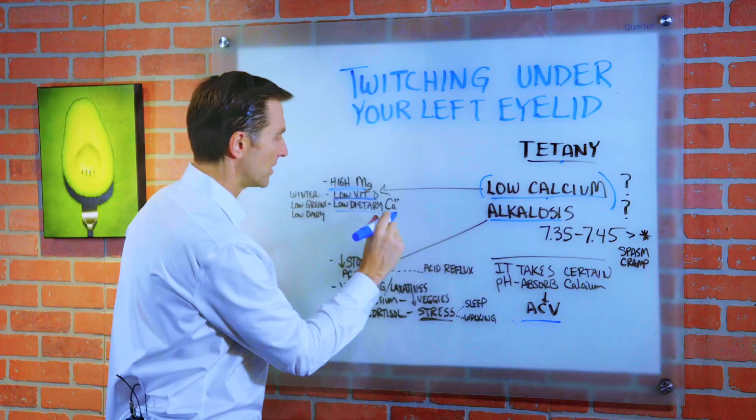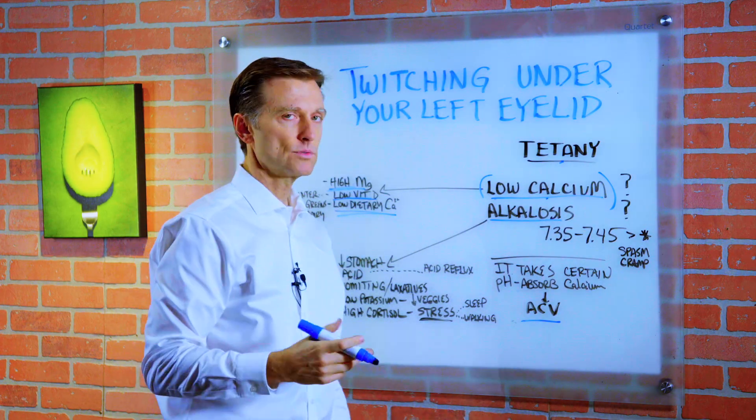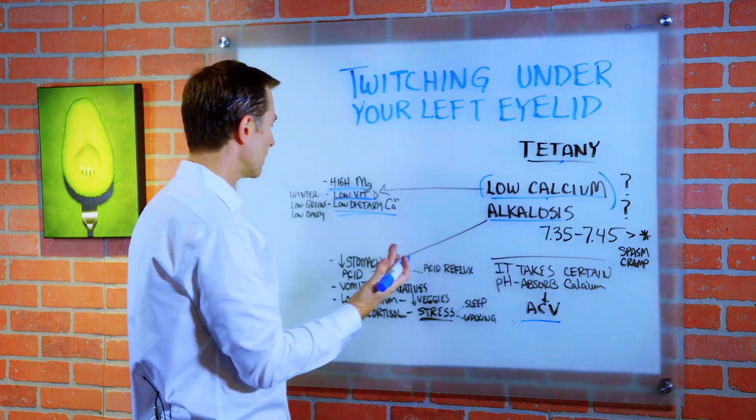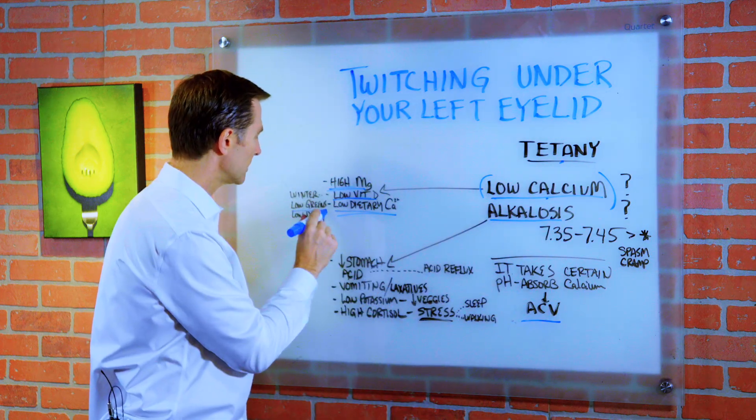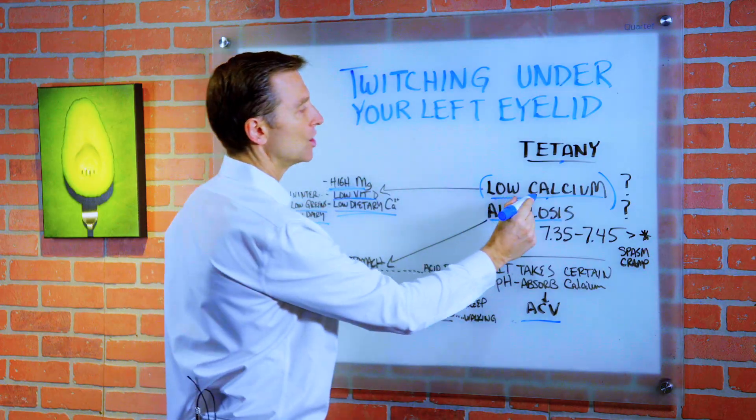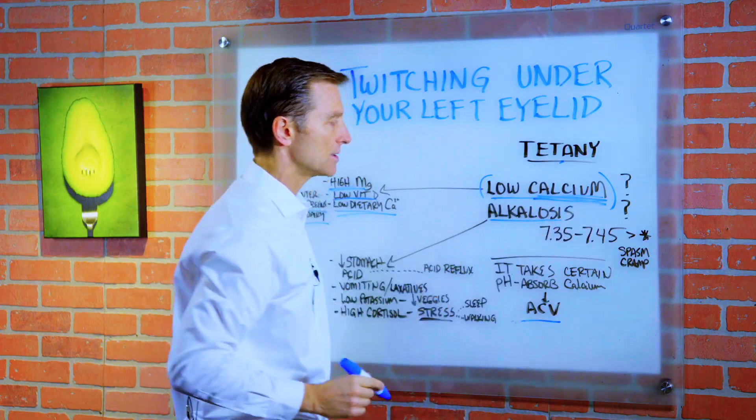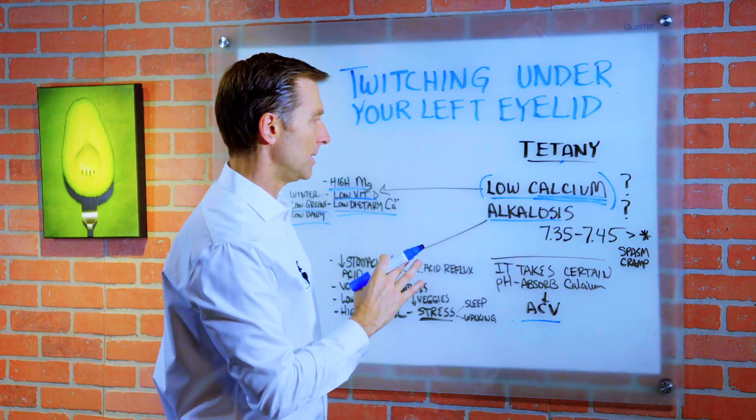Then we have low dietary calcium. Let's say, for example, you don't do dairy. Well, you can also get your calcium from leafy greens. Let's say you're doing no greens and no dairy. That could be one of the reasons why you're low in calcium. There's other reasons, but those are the most common.